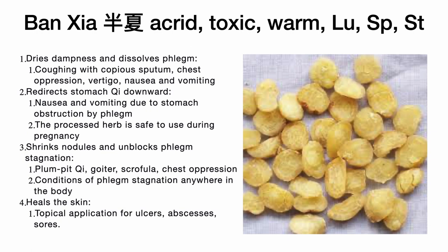Yet another warm and acrid herb in this formula is Ban Xia. In its raw form it is toxic, but when processed with ginger juice it becomes absolutely benign. Ban Xia means 'half summer.' It is an acrid, warm herb that enters the lung, spleen, and stomach channels. Its primary function is to dry dampness and dissolve phlegm — for stagnant fluids in the chest region.